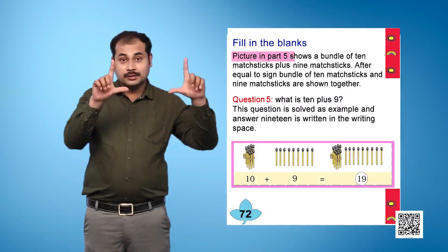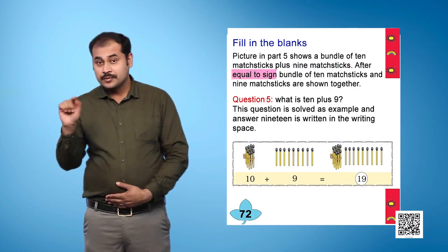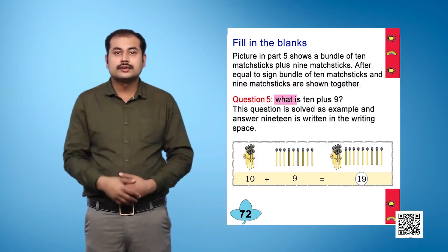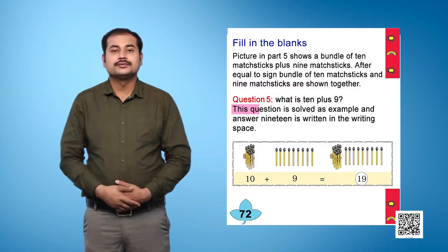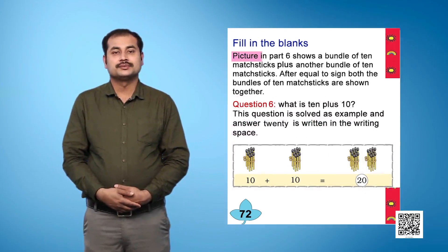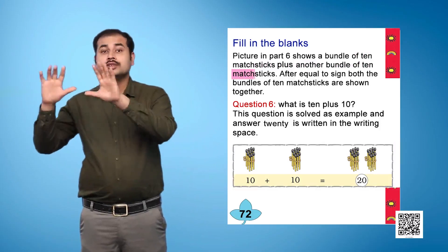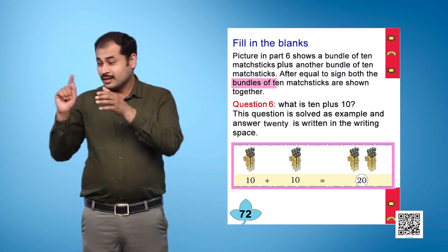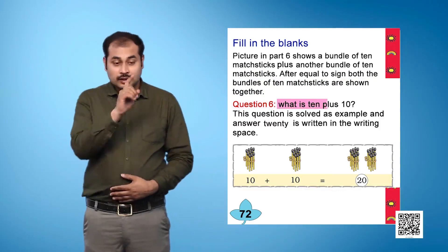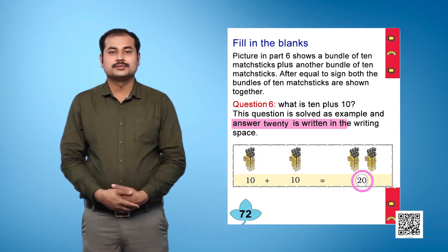Picture in Part 5 shows a bundle of 10 matchsticks plus 9 matchsticks. After the equal to sign, the bundle of 10 matchsticks and 9 matchsticks are shown together. Question 5: What is 10 plus 9? This question is solved as an example and the answer 19 is written in the writing space. Picture in Part 6 shows a bundle of 10 matchsticks plus another bundle of 10 matchsticks. After the equal to sign, both bundles of 10 matchsticks are shown together. Question 6: What is 10 plus 10? This question is solved as an example and the answer 20 is written in the writing space.